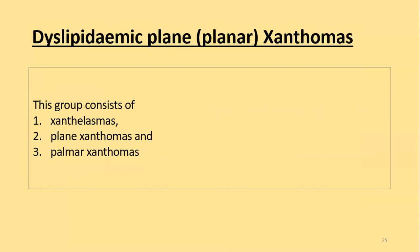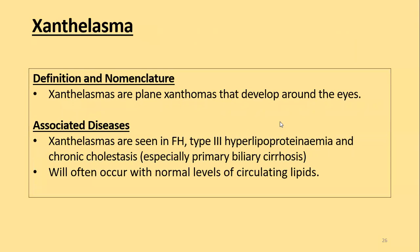Among the plane xanthomas we will discuss xanthelasma, plane xanthomas of the body, and palmar xanthomas. Xanthelasma are plane xanthomas that develop around the eyes. Associated diseases include familial hypercholesterolemia, type 3 hyperlipoproteinemia, and chronic cholestasis, though xanthelasma will often occur with normal levels of circulating lipids.